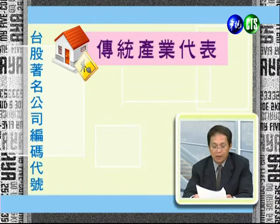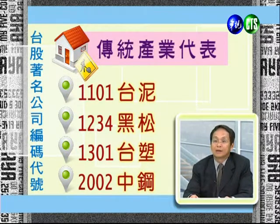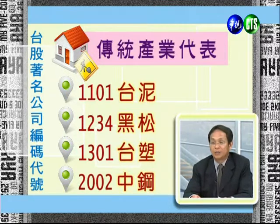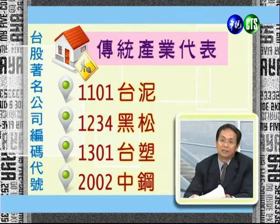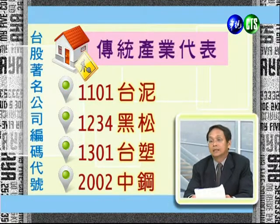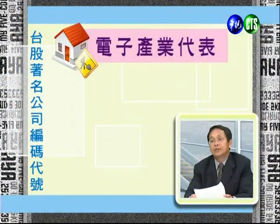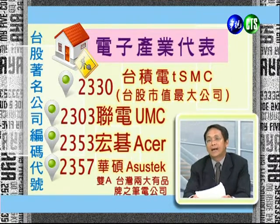根據這些產業類股代號，介紹幾家著名上市公司：傳統類股方面，台泥編號1101；非常老牌食品類股黑松代碼1234，最好記；台塑是傳統塑膠龍頭企業1301；中鋼2002。電子產業類股方面，台積電TSMC代碼2330，是台股市值最大的公司；聯電UMC為2303；有品牌的雙A，宏碁Acer為2353，華碩ASUS為2357。